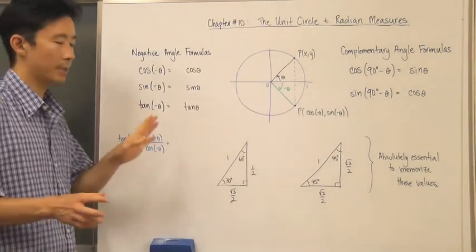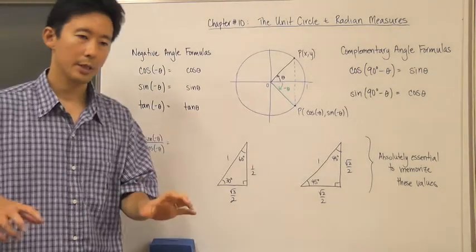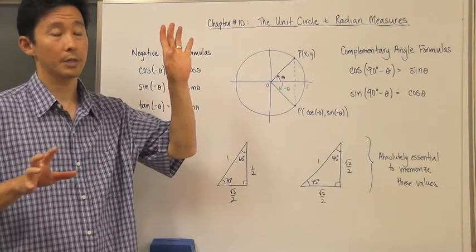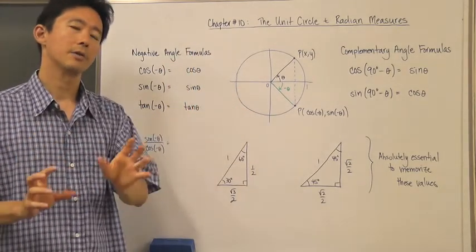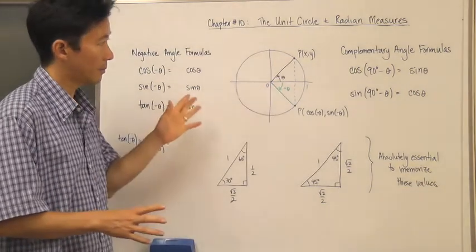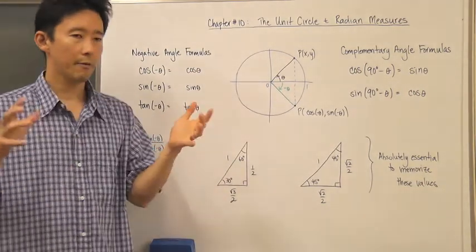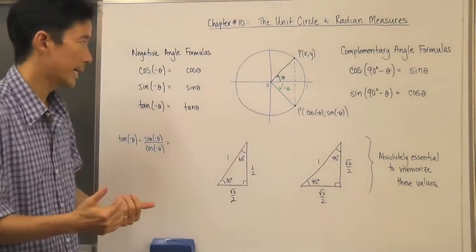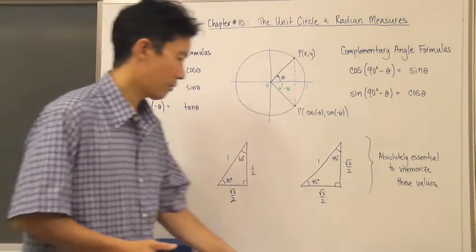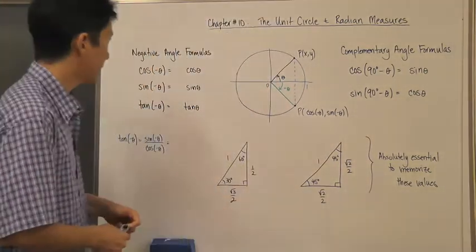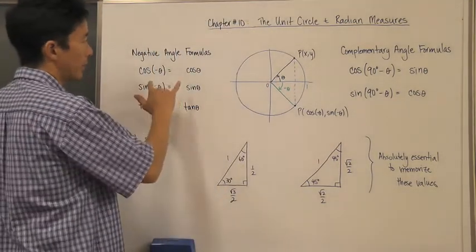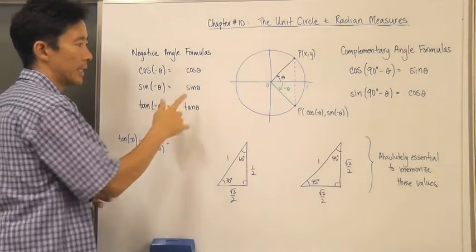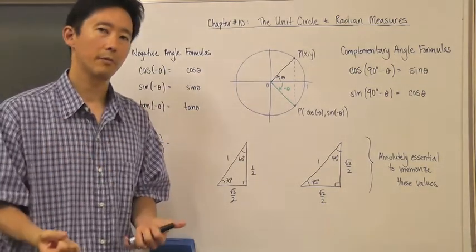We're going to take a look at the relationship between cosine of theta and cosine of negative theta. We're dealing with a positive angle and a negative angle and the relationship between the two. Remember, everything is going to be based upon the unit circle, so we're always going to be referring back to that. What is the relationship between cosine of negative theta and cosine of theta? One angle is negative and the other is positive.